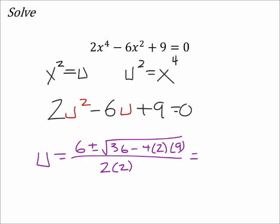So, this ends up being 6 plus or minus the square root of 36 minus 72, right? Which would give us a negative 36 all over 4.